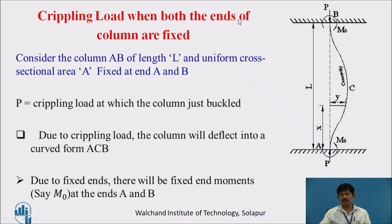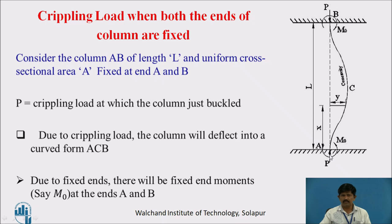To find the crippling load when both ends of the column are fixed, we consider a column AB of length L with uniform cross-sectional area A, fixed at ends A and B. A crippling load P is applied which just buckles the column. Due to buckling, the curvature of the column will be A, C, and B. Since both ends are fixed, it will be subjected to fixed end moments M₀ at ends A and B, acting anti-clockwise at A and clockwise at B.